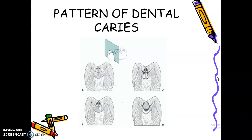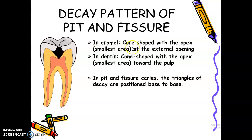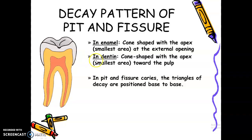We will look at the pattern of dental caries. Remember the triangles of decay. In pit and fissure cavities, in the enamel, it starts small on the outside and gets wider near the dentine area. But in the dentine, it's wider in the DEJ area and gets smaller towards the pulp.